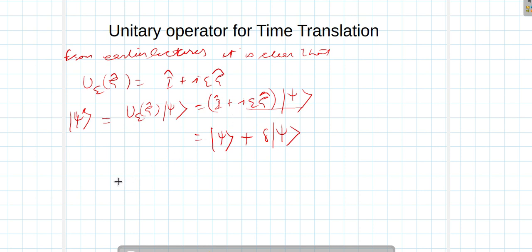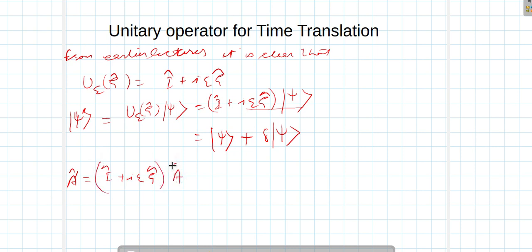Similarly, we have also seen that A prime is equal to (I + iota·ε·G) A (I − iota·ε·G), which is nearly equal to the expression we showed in earlier lectures.